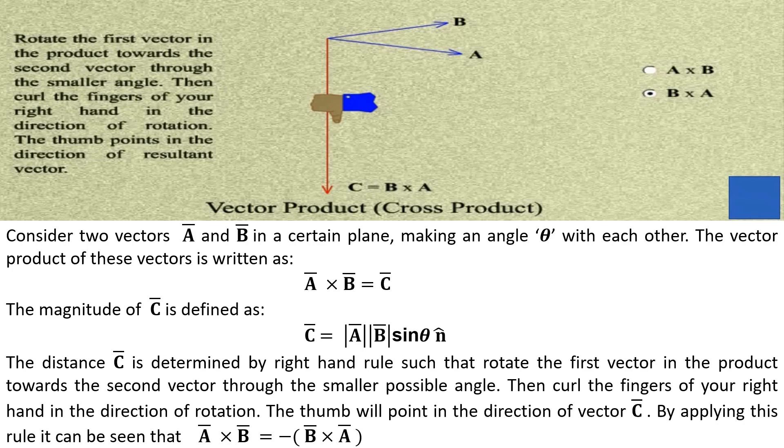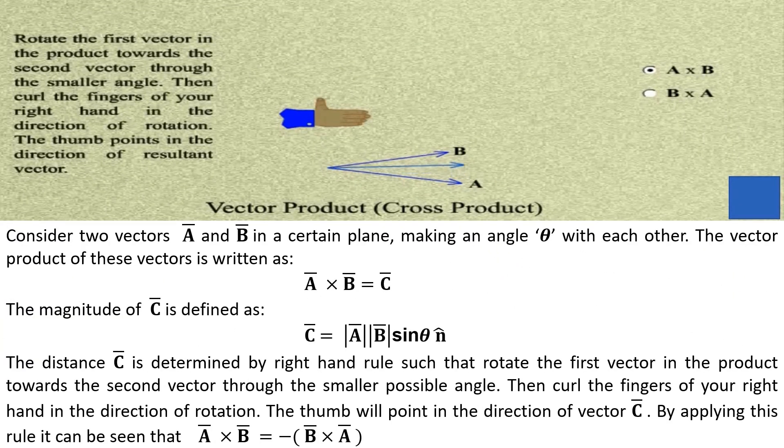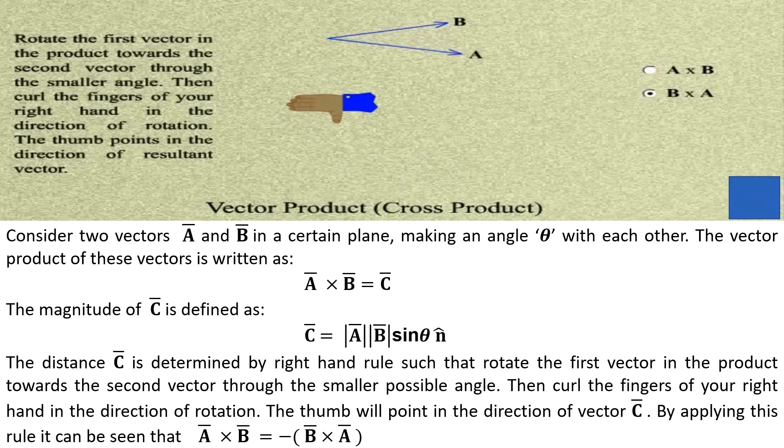The direction of vector C is determined by right hand rule such that you rotate the first vector in the product towards the second vector through the smaller possible angle, then curl the fingers of your right hand in the direction of rotation. The thumb will point in the direction of vector C.